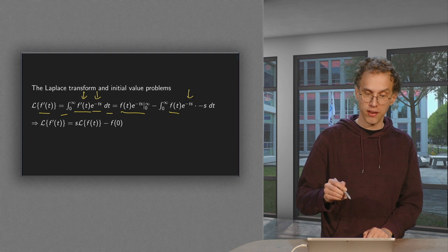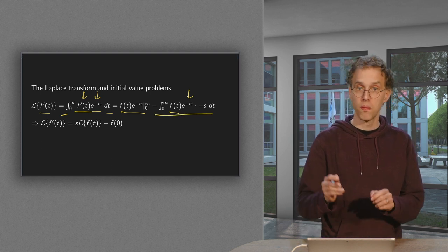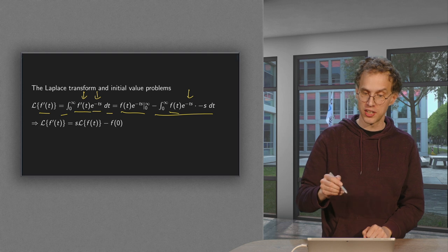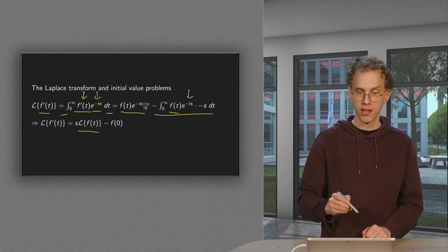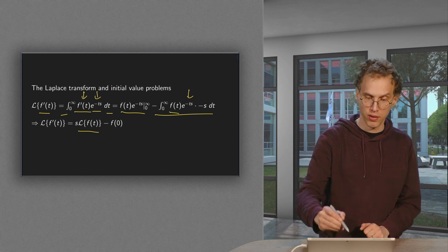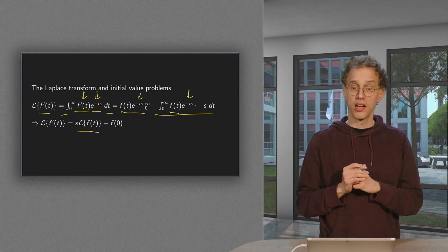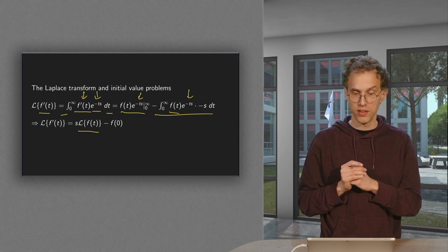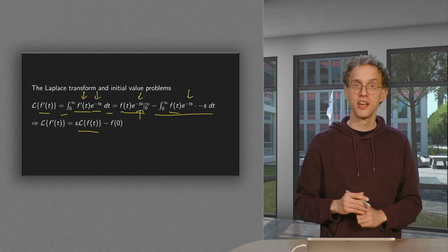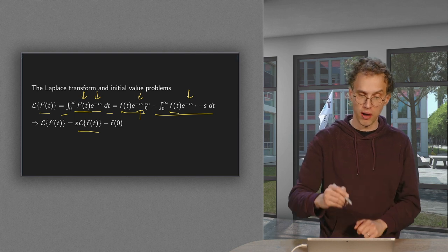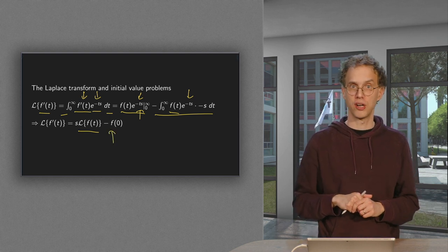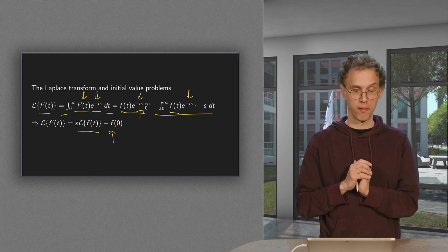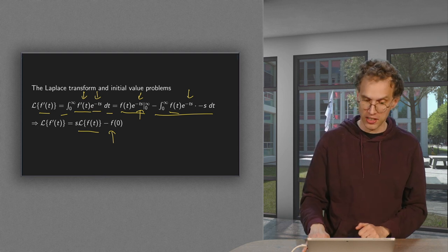So we are left with: this term here gives us a plus s — if we take the minus s out — plus s times the integral from 0 to infinity of f times e to the power minus ts. But that is just the Laplace transform of f. For the boundary terms, if s is taken correctly, the upper boundary disappears, and on the lower boundary we have a 1 from e to the power minus ts and an f of 0, so we get a minus f of 0. This means the Laplace transform of f prime is s times the Laplace transform of f minus f(0). This is how you get rid of derivatives.